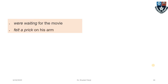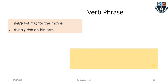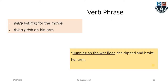Now verb phrases: 'We're waiting for the movie,' 'felt a prick on his arm,' 'running on the wet floor.' Why do we call these verb phrases? Because a verb starts the phrase. 'We're doing what?' — there is a verb that starts the phrase. 'Felt' is also a verb. 'Running on the wet floor' starts with a verb: 'She slipped and broke her arm' — how? By running on the wet floor. A verb is involved which gives us the answer.